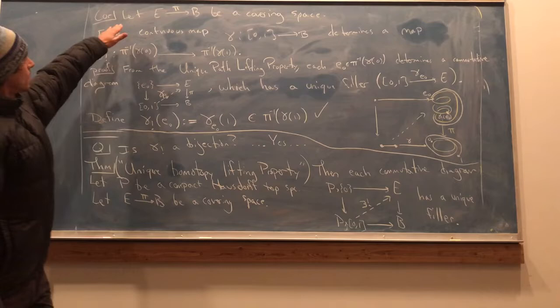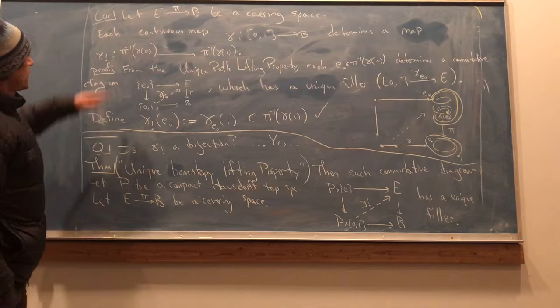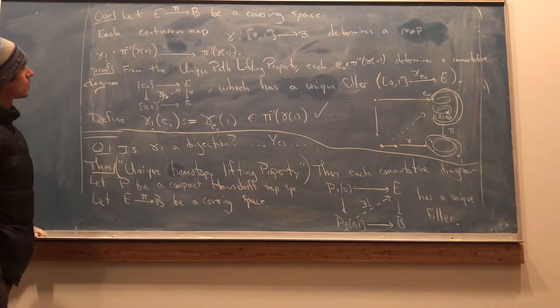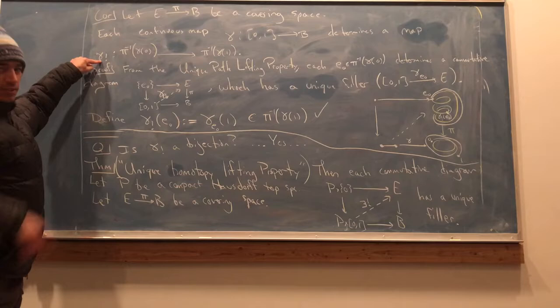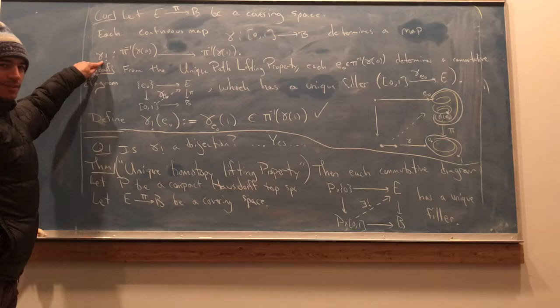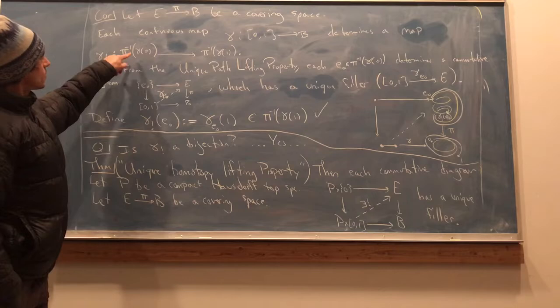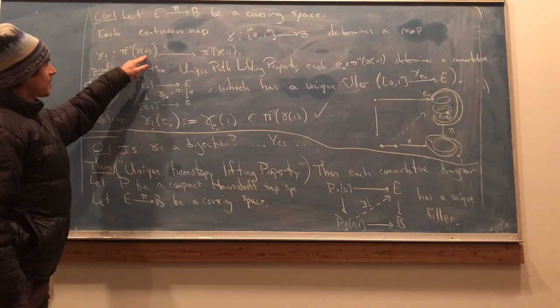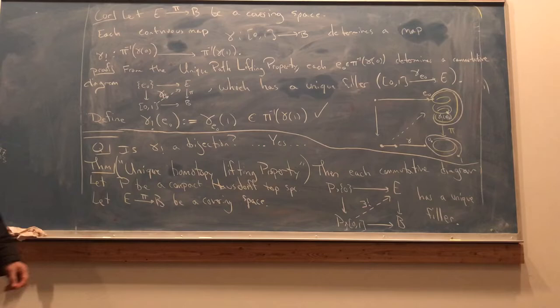So let E to B be a covering space. Then each continuous map to the base determines a map between sets, denoted gamma lower subscript exclamation point, just for fun. That map is from the preimage inside of capital E of the value of the path at time zero to the preimage at time one.